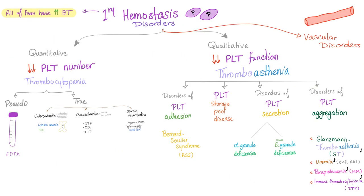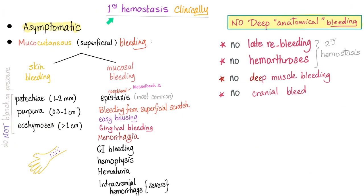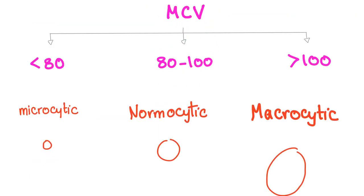Primary hemostasis disorders — all of them — have a prolonged bleeding time. We have quantitative, qualitative, and vascular disorders. Quantitative means decreased platelet number — thrombocytopenia — such as TTP. TTP is a primary hemostasis defect, so we can have asymptomatic patients or mucocutaneous bleeding; very few will have severe bleeding symptoms. Platelets are not the only blood products affected in TTP — red blood cells are also affected. We have hemolytic anemia. Is it microcytic, normocytic, or macrocytic? It's normocytic — the MCV is normal, approximately 80 to 100 femtoliters.